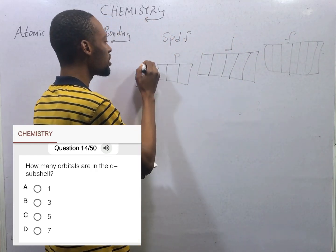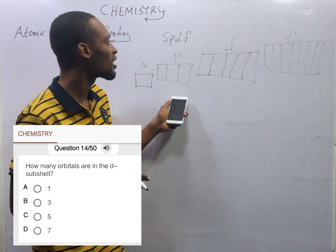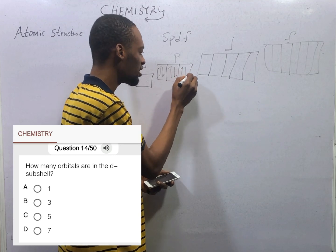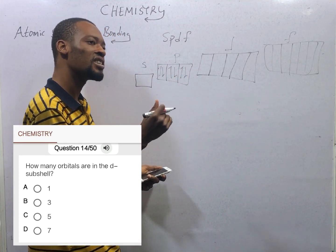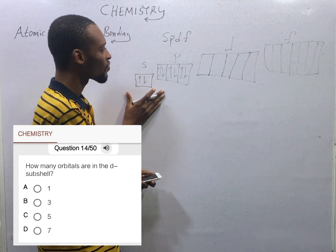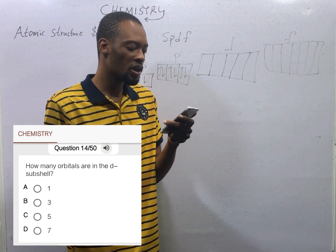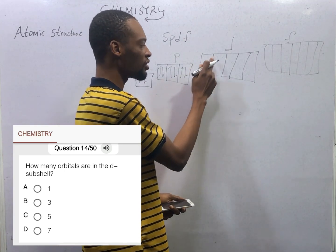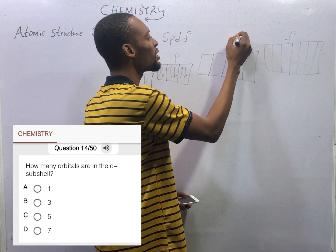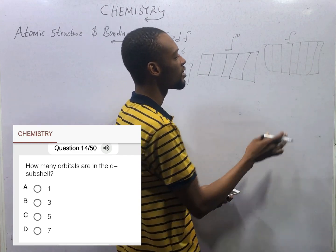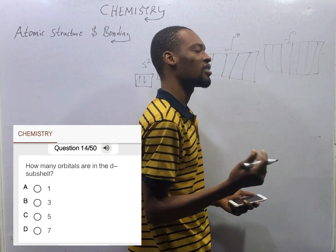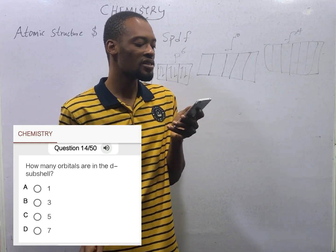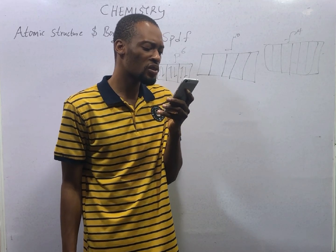For F you have 7 orbitals. So F has 7, D has 5, P has 3, and S has 1. S is not degenerate — it has 1 orbital and can carry 2 electrons. D has 5 orbitals; since 2 electrons can enter each orbital, D can carry a maximum of 10 electrons. F has 7 orbitals, so F can carry a maximum of 14 electrons. Option C is the correct option.